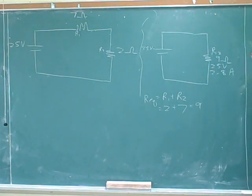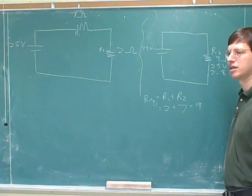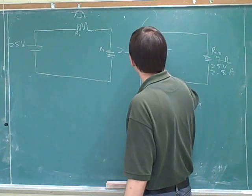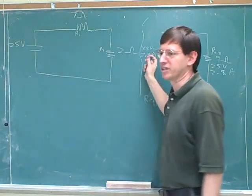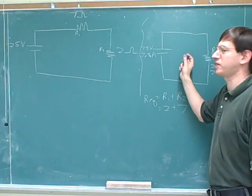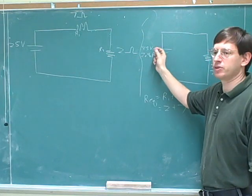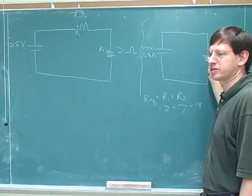Any other numbers we can figure out about this picture? The current of the battery will be the same as for the resistor, so that will be 2.8 amps there as well. That's very important. And now there's nothing else we can figure out about this picture, right? Because we've got two numbers for the battery and one number for the resistor.